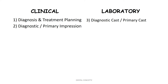If there is any condition requiring tissue alteration, we will address that and then make the primary impression. If there is no such condition, the diagnostic impression can be used as a primary impression. When we pour the primary impression we get the primary cast, and this primary cast is used for the fabrication of a custom tray.